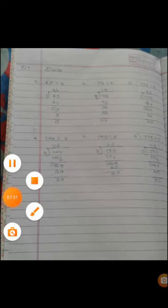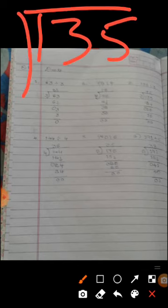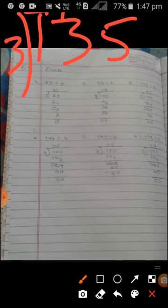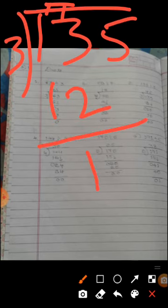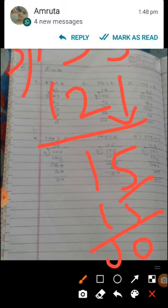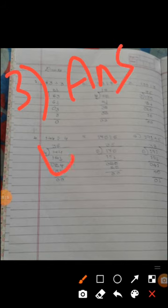Third one, 135 can be divisible by 3. 3 fours are 12. 13 minus 12 it become 1. It become 5. 3 fives are 15. The answer is 45.